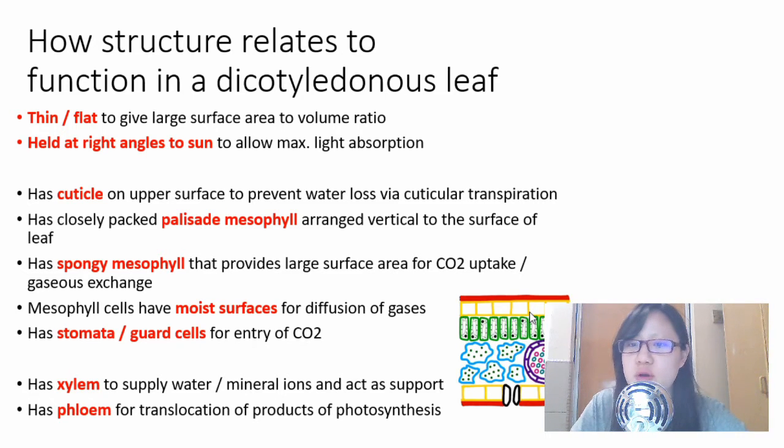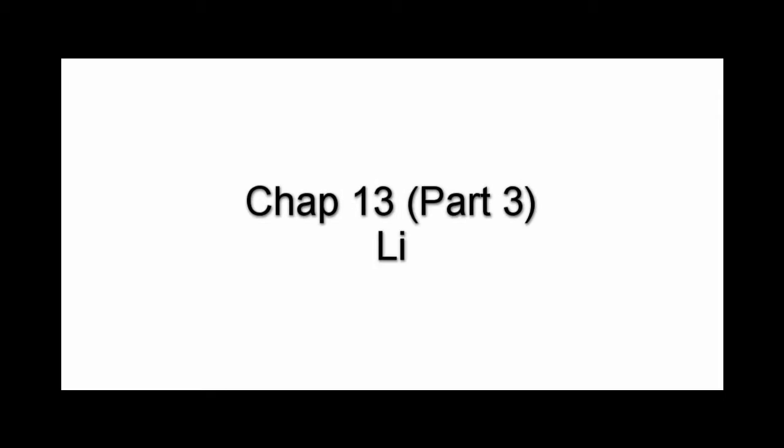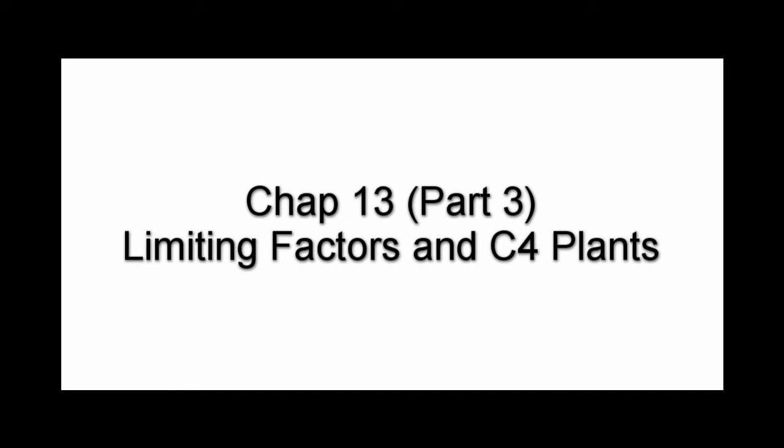All three things - chloroplasts, palisade mesophyll cells, and the dicot leaf - are all structurally adapted to carry out and maximize the rate of photosynthesis. Which leads me to the content of this video: Chapter 13 Part 3 on limiting factors and later C4 plants.